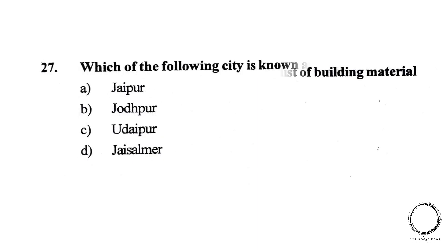Next, which of the following city is known as the city of Lake? A. Jaipur, B. Udaipur, C. Udaipur, D. Jaisalmer. The right answer is C, Udaipur.